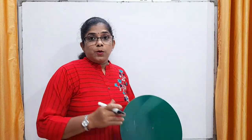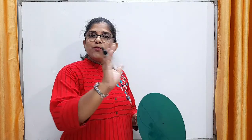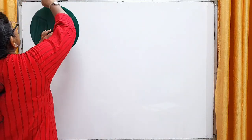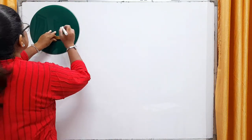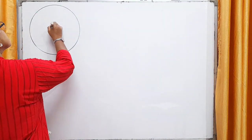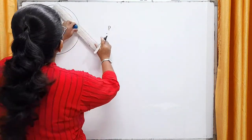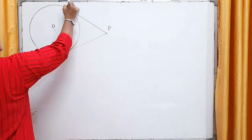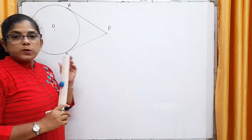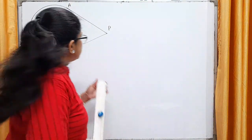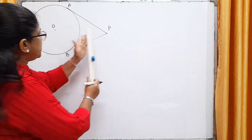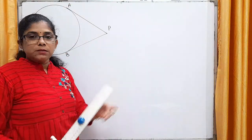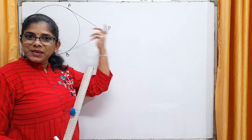Whenever we prove any theorem, one figure for the theorem is required. So, this is the required figure for today's theorem. One circle with center O. P is the external point. From this point, PA and PB are the two tangents drawn to this circle. Now, we have to prove that these two tangents are equal.